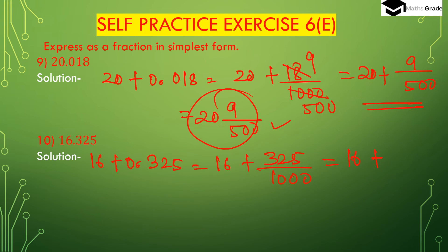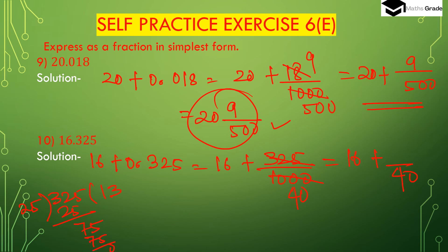Now divide 325 and 1000 by their common factor 25. 1000 divided by 25 is 40, and 325 divided by 25 is 13. So we get 13 divided by 40.